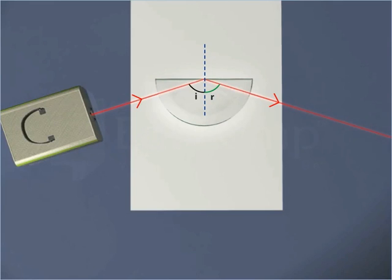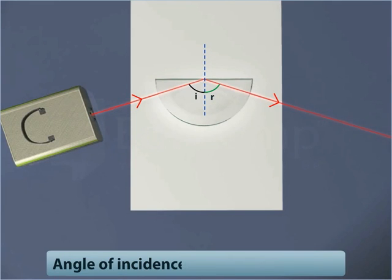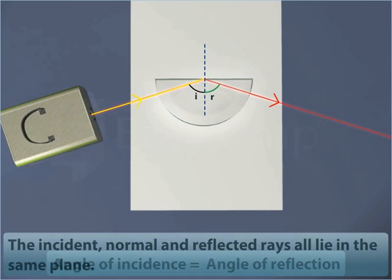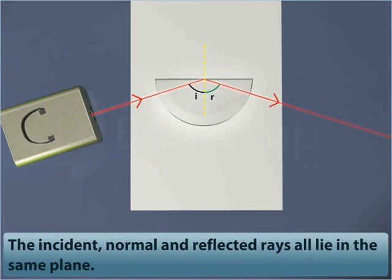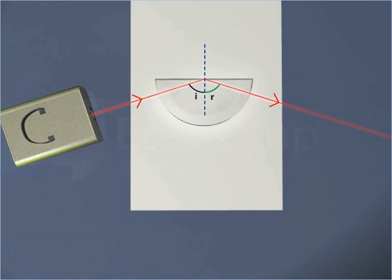As you can see here, the angle of incidence is equal to the angle of reflection. Also, the incident, normal, and reflected rays all lie in the same plane. Thus, total internal reflection obeys the laws of reflection.